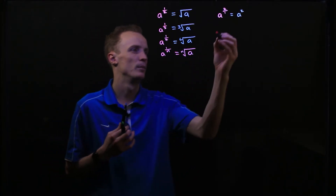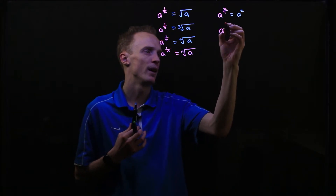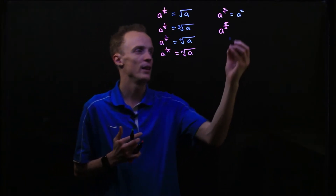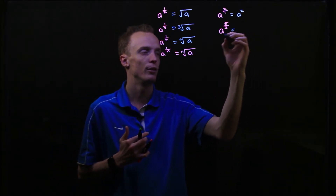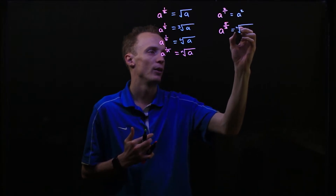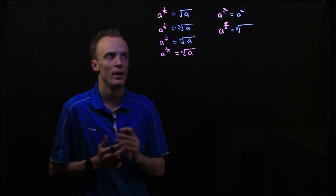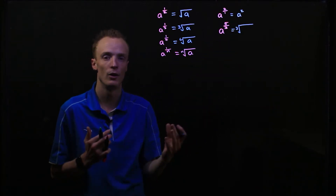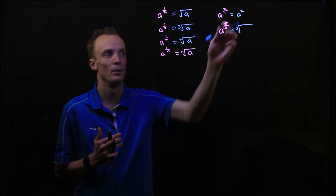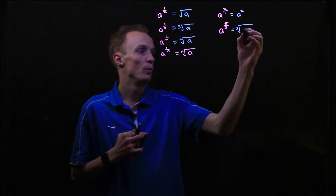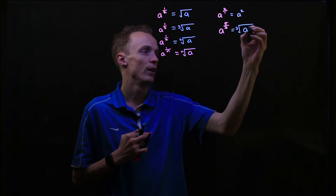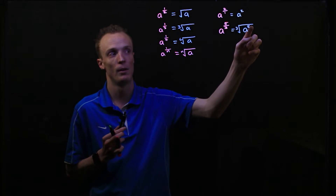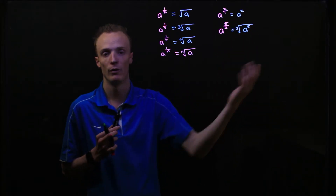What if I had a number that had an index of 5 over 3? Well we know the denominator tells us that we need to find the cube root, or the third root, of our base. But the numerator tells us that we actually need to multiply this base value by itself however many times that value is — in this case, five times. So we need to go: what is our base value multiplied by itself five times, then we find the third root of it.